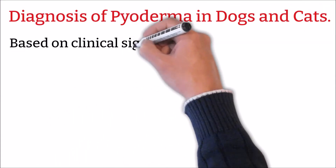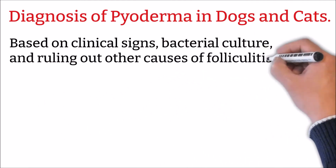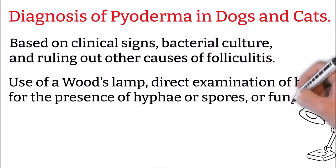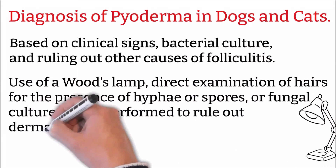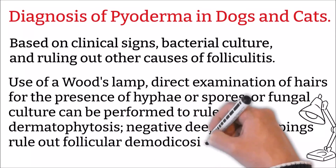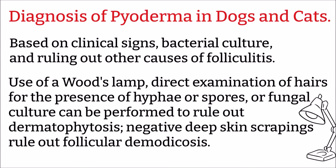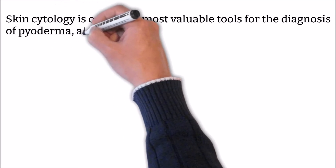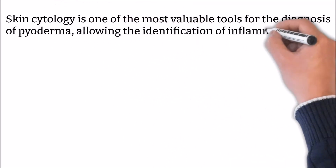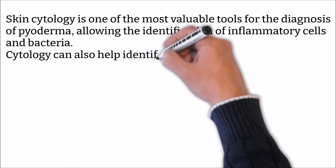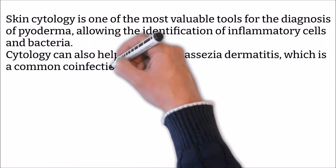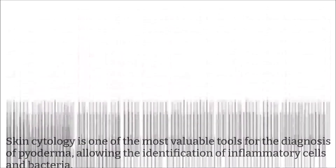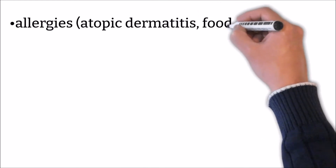Diagnosis of pyoderma in dogs and cats is based on clinical signs, bacterial culture, and ruling out other causes of folliculitis. Use of a Wood's lamp, direct examination of hairs for hyphae or spores, or fungal culture can be performed to rule out dermatophytosis. Negative deep skin scrapings rule out follicular demodicosis. Skin cytology is one of the most valuable diagnostic tools, allowing identification of inflammatory cells and bacteria, and can also help identify Malassezia dermatitis, which is a common co-infection.